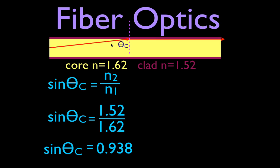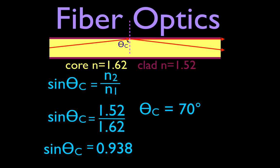So now we can calculate the critical angle for fiber optic cable. The sine of the critical angle equals N2 divided by N1 — N2 being the index of refraction of the cladding (1.52), divided by the core (1.62). Note that the sine must be less than 1, so it's always the smaller index divided by the larger. The sine of the critical angle is 0.938. Using the inverse sine function on our calculator and entering 0.938, we find that the critical angle for a fiber optic cable with a core of 1.62 and cladding of 1.52 is approximately 70 degrees. If we increase the angle just a little beyond that, all of the light — and all of the signal — will be reflected internally.